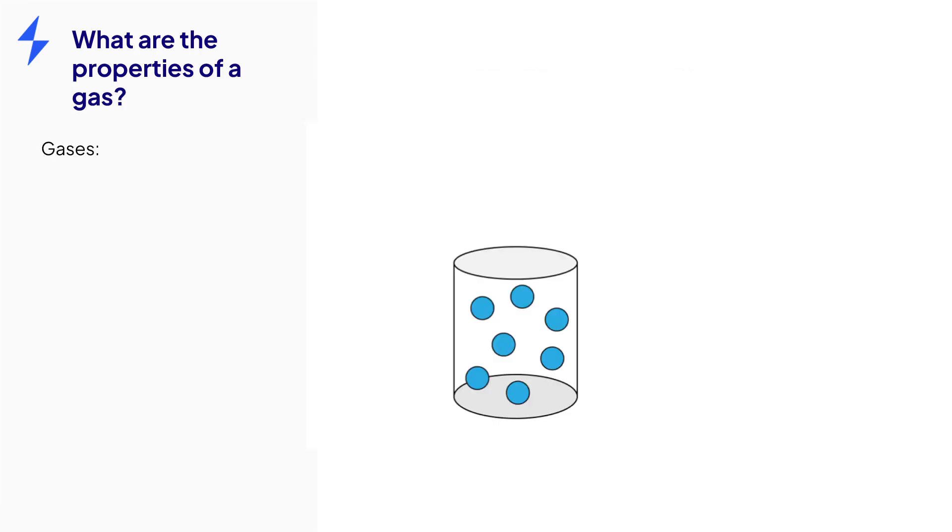The particles in a gas move quickly and randomly in all directions. A gas therefore has no fixed shape or volume and will completely fill a container.